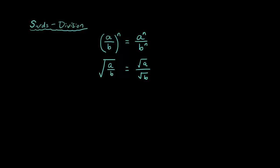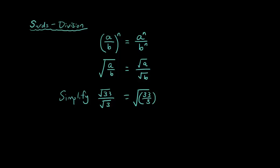Let's say we have: simplify the square root of 33 over the square root of 3. What you can do is put it underneath one big square root symbol and we have 33 over 3 inside the square root. So within the square root, 33 divided by 3 is 11, and that is our answer.